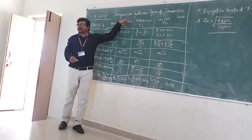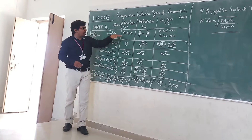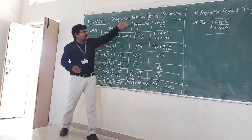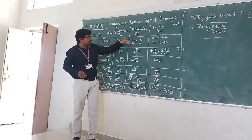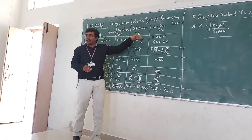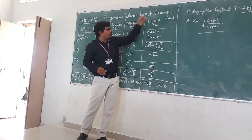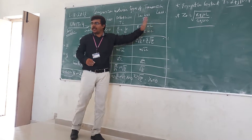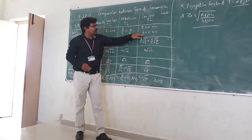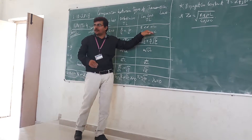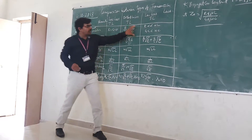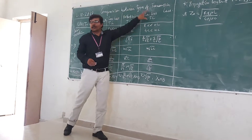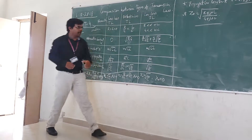The condition for lossless is R equal to G equal to 0. For distortionless it is R by G equal to L by C. In case of low loss, R is much less than omega L and G is much less than omega C. These are the conditions for lossless, distortionless, and low loss.